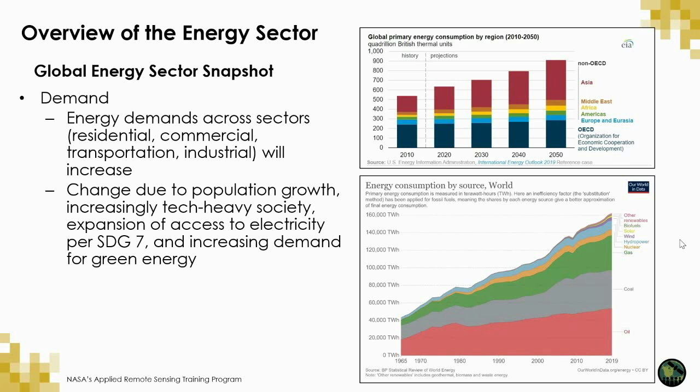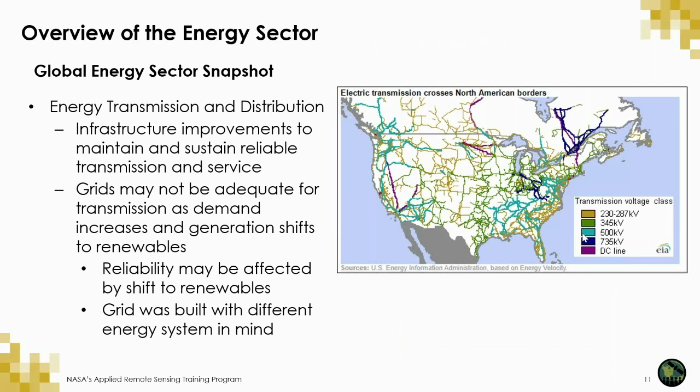Energy consumption for the industrial sector—which includes refining, mining, manufacturing, agriculture, and construction—accounts for the largest share of energy consumption of any end-use sector. Together, China and the United States represent 40% of global energy consumption. Demand will likely continue to increase due to population growth, expanding access to energy, and greater demand for renewable energy. Energy providers are seeking to meet this need via greater and smarter energy transmission and distribution.